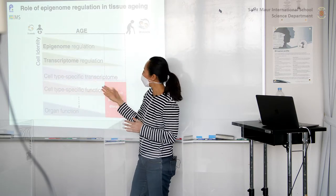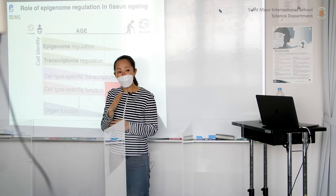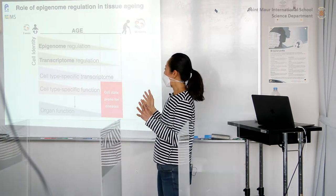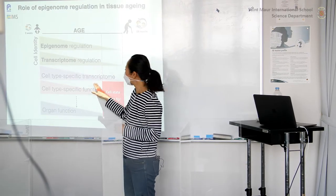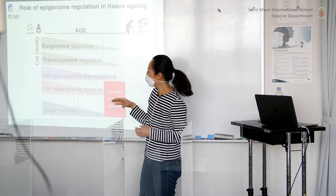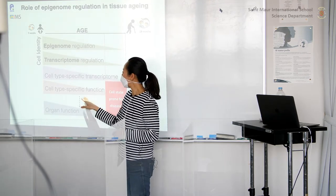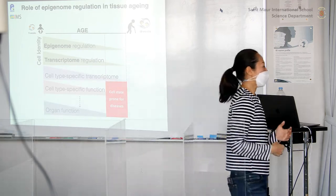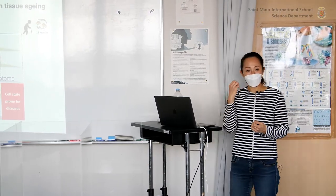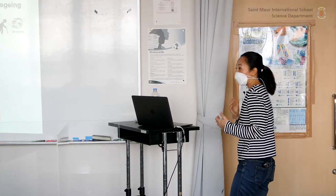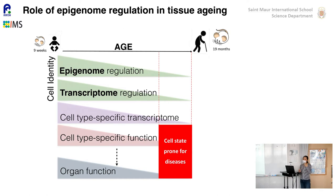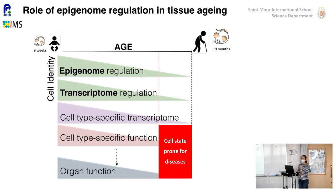When the specificity of the transcriptome becomes blurry, cell type-specific functions are lost. You can't run because you're not making enough muscle, or the muscles can't function properly, so you become frail — and that happens in every organ: muscles, eyes, brain, lungs, everything. I believe this opens up a state that is prone for diseases, including the ability to fight viruses, as well as developing various diseases like cancer.